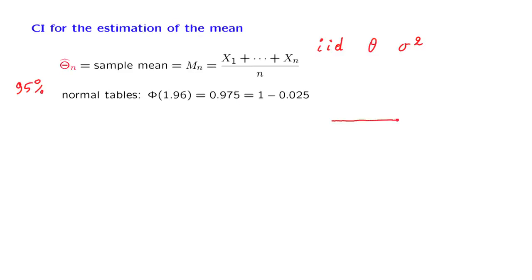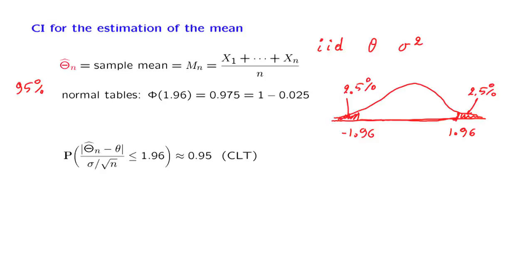If we take a standard normal random variable, then there is probability 97.5% of falling below this number 1.96, which means that there is probability 2.5% of falling above that number. And by symmetry, the probability of falling below minus 1.96 is also 2.5%. This means that this middle interval here has probability 95%. And we exploit this fact as follows.